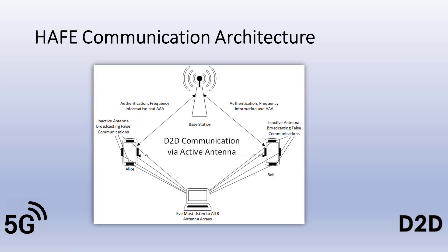The proposed HAFE communications architecture will decrease the possibility of man-in-the-middle, eavesdropping, and replay attacks by increasing the number of communications that need to be captured and interpreted by an attacker. In a traditional D2D, the active antennas are known and there is only one communication session to capture. In the proposed HAFE architecture, the attacker would need to listen to N to the power of R communication paths, where N is the number of antenna arrays and R is the number of arrays on each device used for communication. In the minimum configuration with four antenna arrays per device, that would be 16 communication combinations the attacker must capture and interpret, forcing them to have equipment capable of capturing multiple signals simultaneously and breaking the encryption. The proposed HAFE scheme has the potential to eliminate or greatly reduce real-time man-in-the-middle attacks for D2D communications.